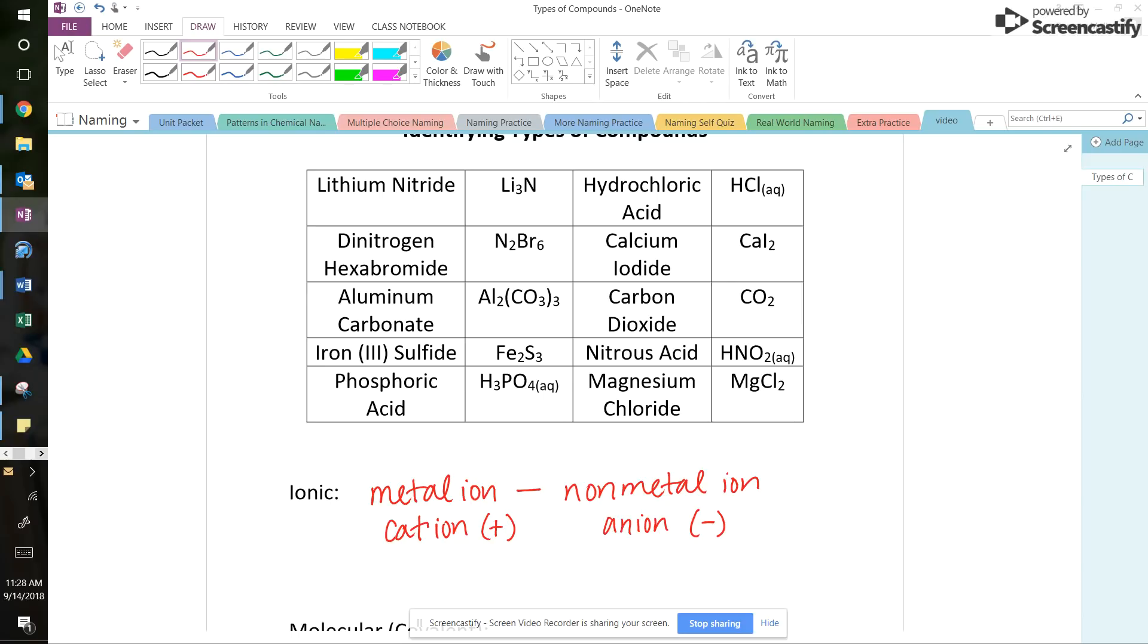So if ionic compounds start with a metal cation and end with a non-metal anion, then when we look up at that list above, we could probably be able to figure out which ones are the ionics. So I'm going to start with the formulas because I think that might be a little bit easier. So when I look at that first one, Li3N, I need to find lithium on the periodic table, which is one of those alkali metals. So I know that's a metal.